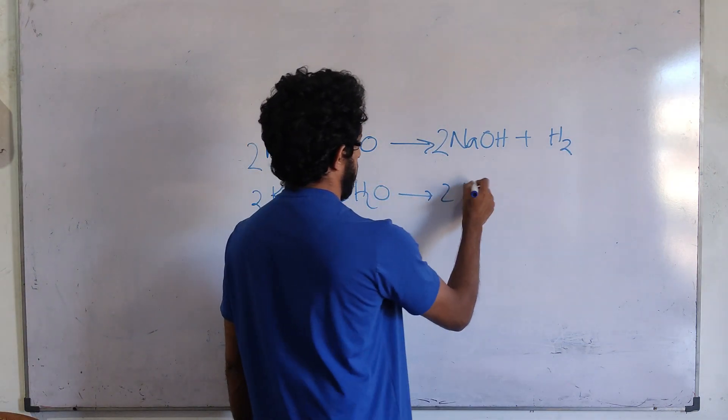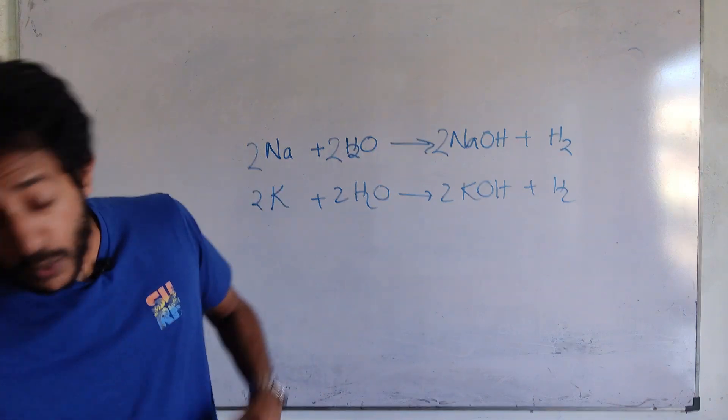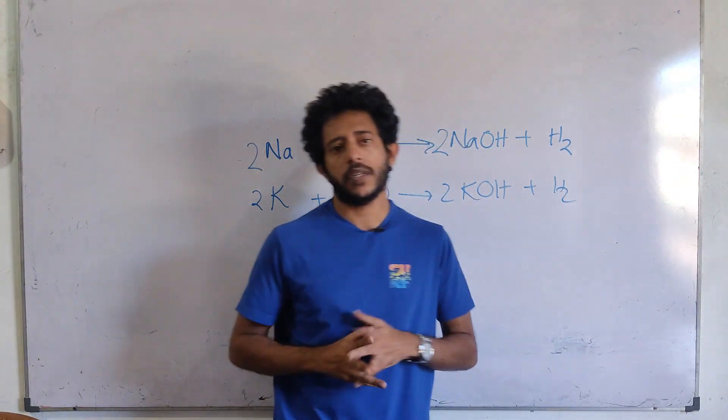These are the two equations we can write: sodium reacts with water to produce sodium hydroxide and hydrogen gas. The same kind of reaction happens with potassium as well.